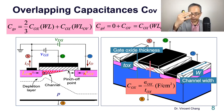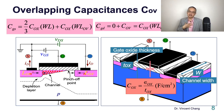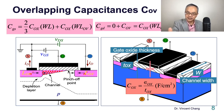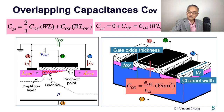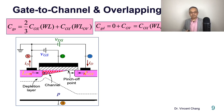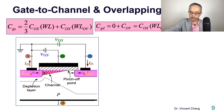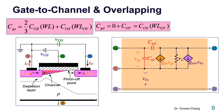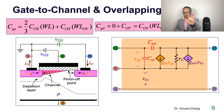So gate-to-source and gate-to-drain each come from gate-to-channel plus the overlapping capacitance. That completes the first group — CGS and CGD. Now let's move on to the second group: source-to-body and drain-to-body.